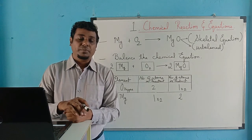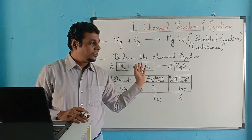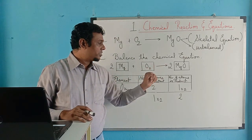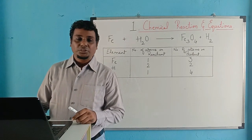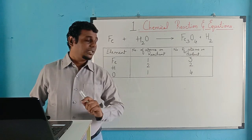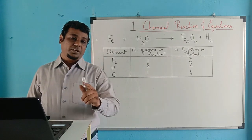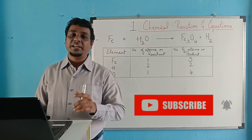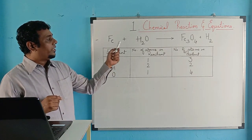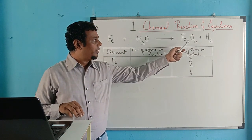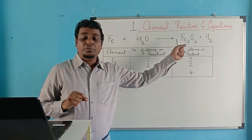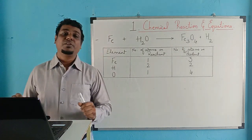The conservation of mass states that mass can neither be created nor destroyed. So dear students, you now understand the way of balancing a chemical equation. Before the next example, if you have not yet subscribed to the channel, kindly subscribe and hit the like button. Our next example is iron reacting with water, which produces Fe3O4 plus hydrogen gas is evolved — a sign of chemical reaction.